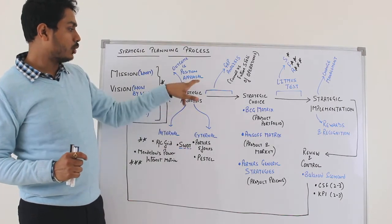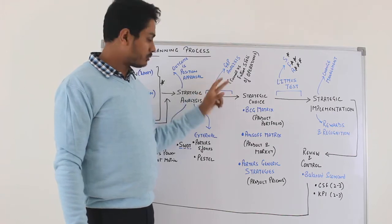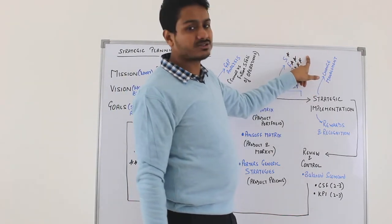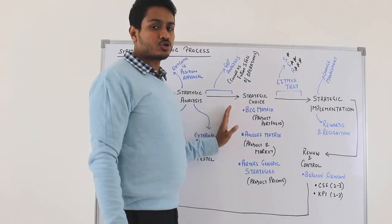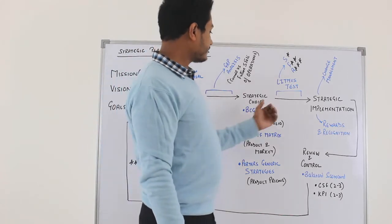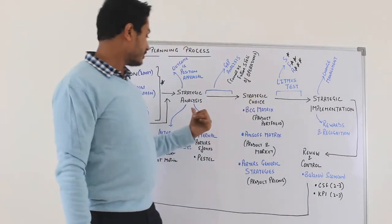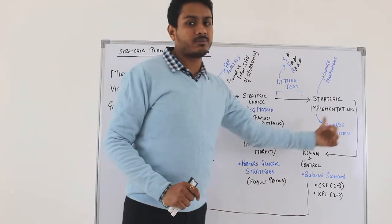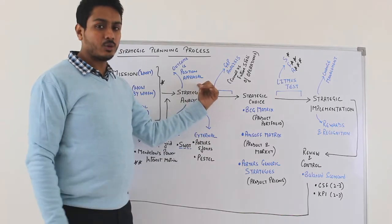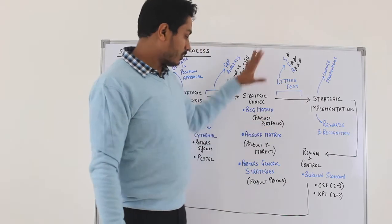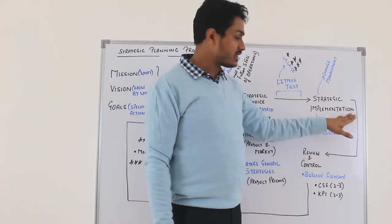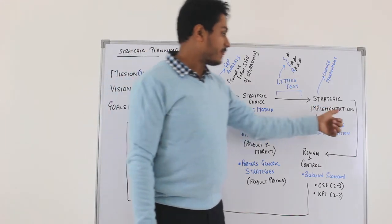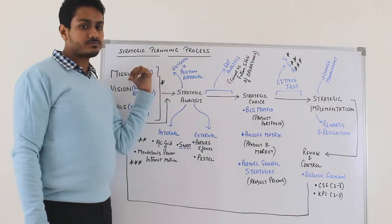Strategic analysis output was position appraisal; gap analysis helped make a choice; after the litmus test, if all three variables are a yes, you go ahead and implement your chosen strategic choice — this is strategic implementation. Strategic analysis is the most critical component: if the data is right and gives you the right outcome, you will be able to take the right decisions. Effective implementation — and the word is effective — is what will help you achieve your ultimate goals.